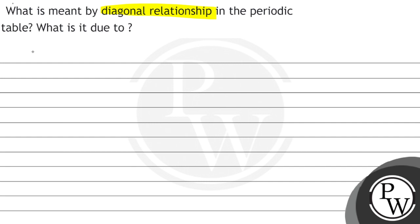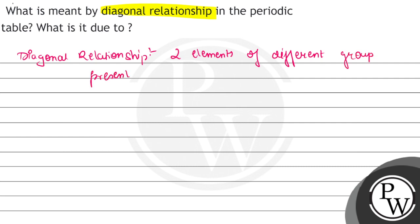So what is diagonal relationship? Diagonal relationship means two elements of different groups present diagonally have some reactivity.